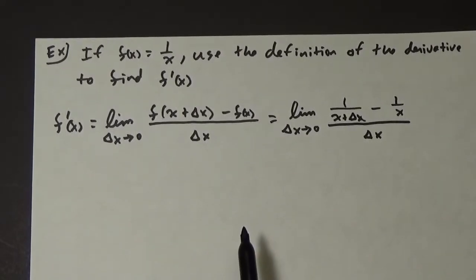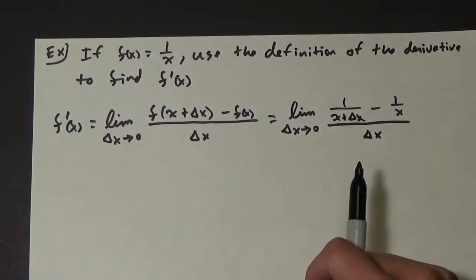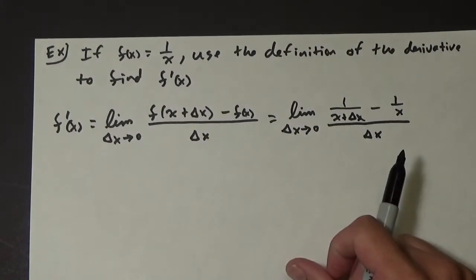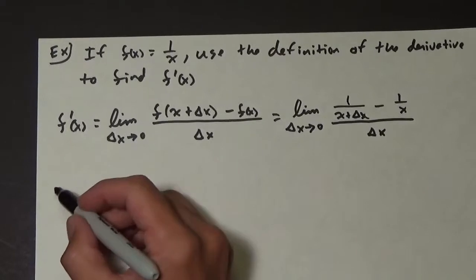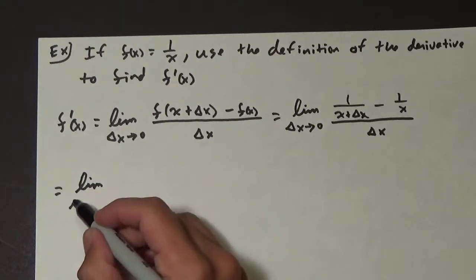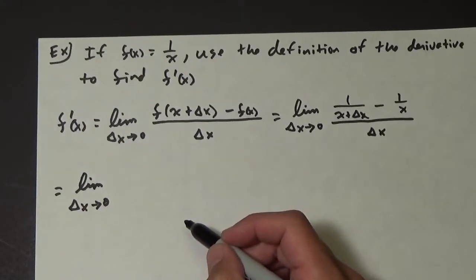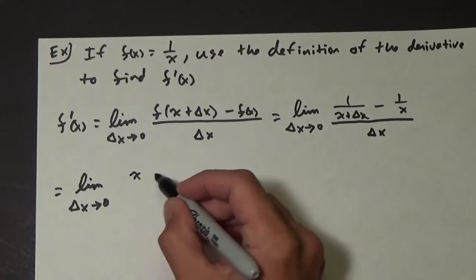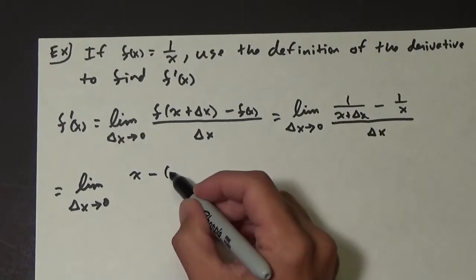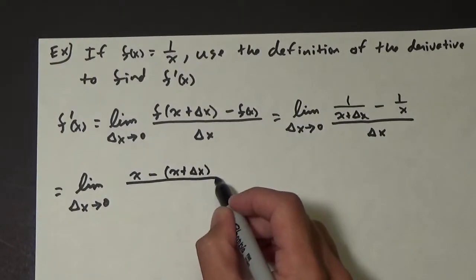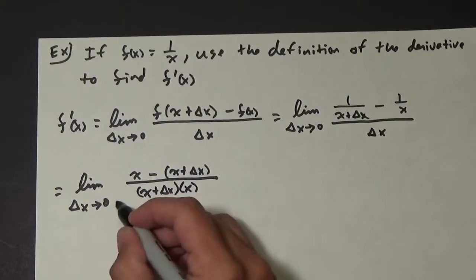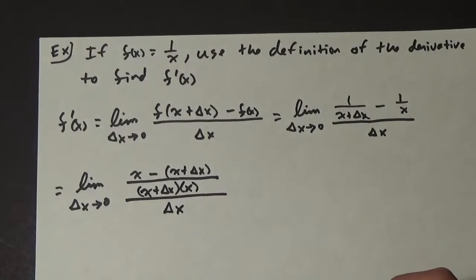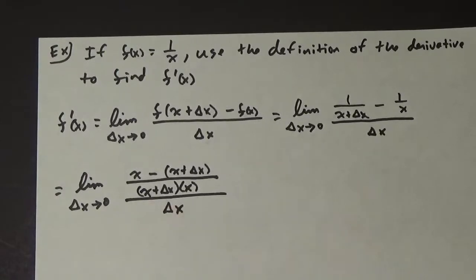Now we need to evaluate this limit. I think our first step should be to combine these two fractions — we need a common denominator, and it appears the common denominator is x times x plus delta x. So we get the limit as delta x approaches zero of x minus x plus delta x, all over x plus delta x times x, all over delta x.